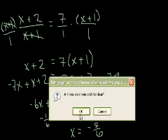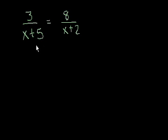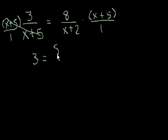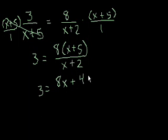Let's do another one. 3 over x plus 5 is equal to 8 over x plus 2. We do the same thing here, but now we have two expressions we want to get out of the denominators: x plus 5 and x plus 2. Let's do x plus 5 first — multiply both sides by x plus 5. On the left-hand side they cancel out, leaving 3 equals 8 times x plus 5 all over x plus 2. Distributing the 8, that's 8x plus 40 over x plus 2.